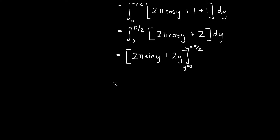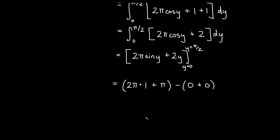Plugging in y equals pi over 2: we get 2 pi sine of pi over 2, which is 1, plus 2 times pi over 2, which is another pi. Then plugging in 0: 2 pi times sine of 0 is 0, plus 2 times 0 is also 0. So we get 2 pi plus pi minus 0, giving us an answer of 3 pi for this double integral.